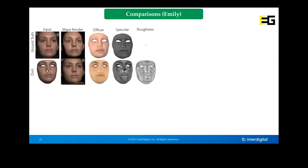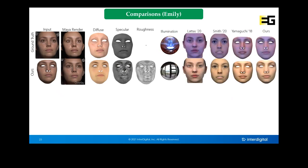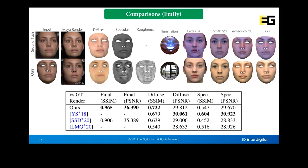We show results on Emily, where the top row shows ground truth data and the second row shows our final reconstruction and the overlay on the real image, along with estimated diffuse, specular, and roughness. We compare relighting against LaTAS, Smith et al., and Yamaguchi et al. For the final render, our method obtains the best SSIM and PSNR scores. For diffuse and specular terms, results are generally close with Yamaguchi slightly better on most metrics except diffuse SSIM, where we are slightly better.